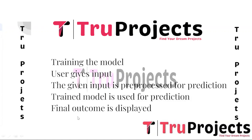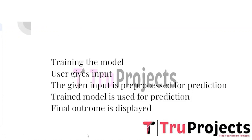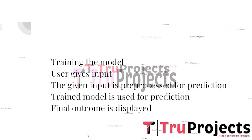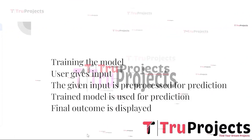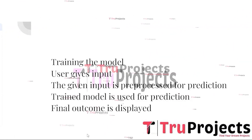The last step is displaying the final outcome. The predictions from all four models are collected and the final outcome is displayed to the user through the Flask web interface. The results indicate whether the given input image is classified as an accident or not, based on the models' learned patterns and features.